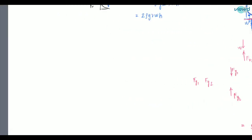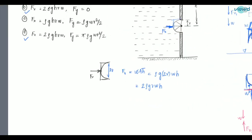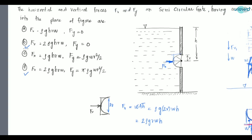So FY = (π/2)ρgR²W. Looking at the options, the right answer is option B or D. Option with FY = 0 is not correct. Solve more problems on curved surface hydrostatic force and we will master this topic. Thank you.